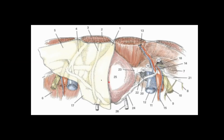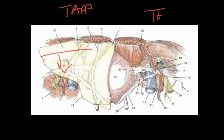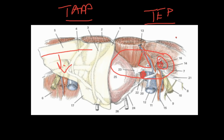From the laparoscope's perspective, in a TAPP repair you see the peritoneum in place and usually need to make an incision in it to peel it down and open the working space. In a TEP, you see the structures without the peritoneum in the way. For fixing the hernia, you lay a single mesh covering the direct hernia space (Hesselbach's triangle), the indirect hernia space, and the femoral space. Both approaches are equally valid — it really comes down to surgeon or institutional preference, with no strong data favoring one over the other.